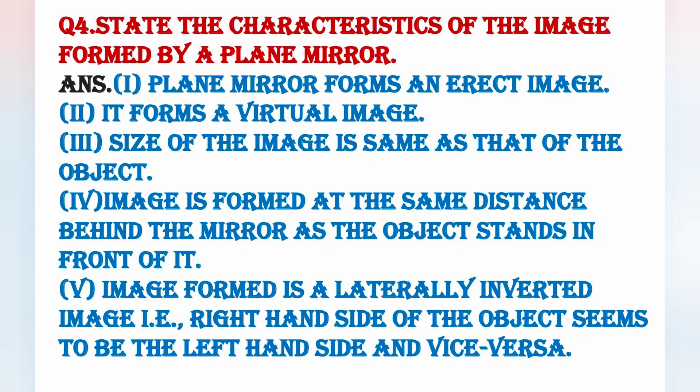Next question: state the characteristics of the image formed by a plain mirror. First, plain mirror jo image form karta hai, woh seedhi hoti hai, yaani erect hoti hai. Second, plain mirror hamesha virtual image form karta hai, woh hamesha behind the screen banti hai. Third, jo image hoti hai, woh bilkul same size mein hoti hai object ke. Fourth, jo image hoti hai, woh same distance par hoti hai jitna distance object ka mirror se hota hai.